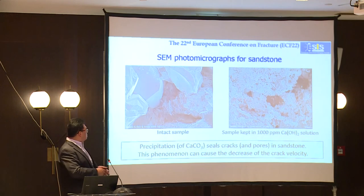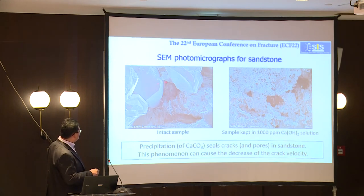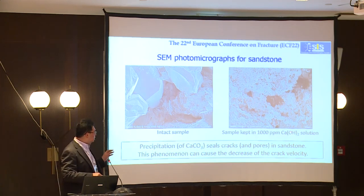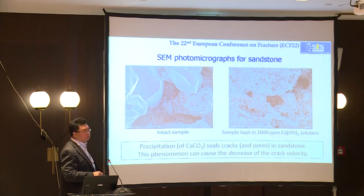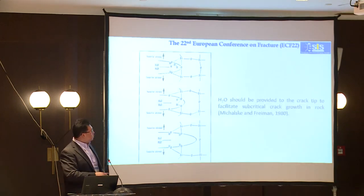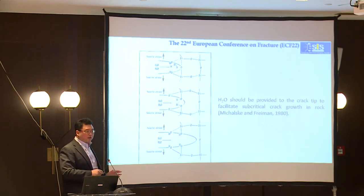Why does this happen? Looking at photomicrographs — this is the intact sandstone, where we can see only the quartz grains. But if we keep the sandstone in Ca(OH)₂ solution, precipitation occurs. These are precipitations of CaCO₃, calcium carbonate. The calcium carbonate precipitates and seals the fractures and pores in rock. So the supply of water to the crack tip is suppressed by the precipitation, and therefore a decrease in crack growth occurs.